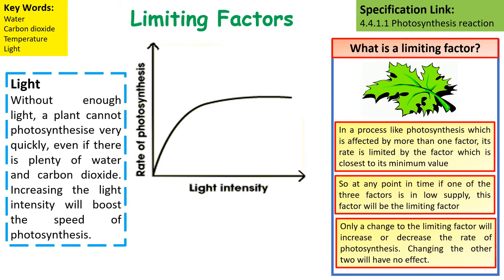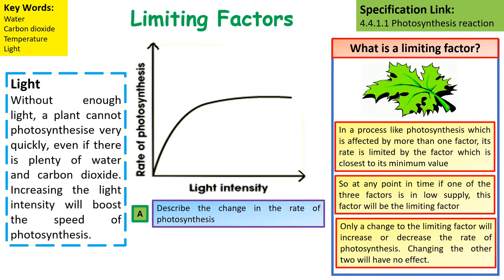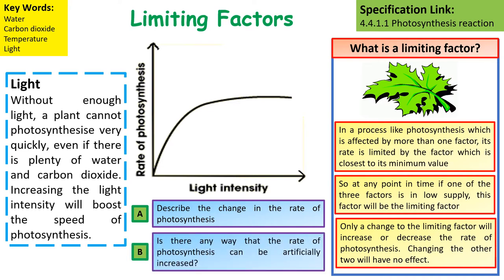Without enough light, a plant cannot photosynthesise, even if there's plenty of water and carbon dioxide. From this graph, as light intensity increases, the rate of photosynthesis increases until a point — that would be the point at which there is some other limiting factor. If we were looking at artificially increasing this rate, you could use high intensity light bulbs or something that is going to artificially increase the level of light.